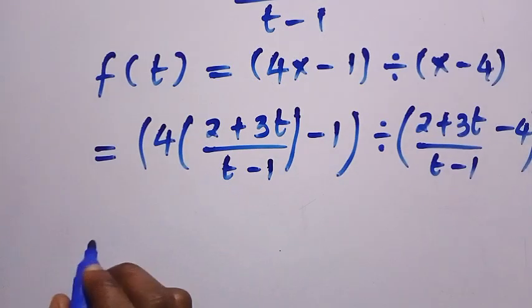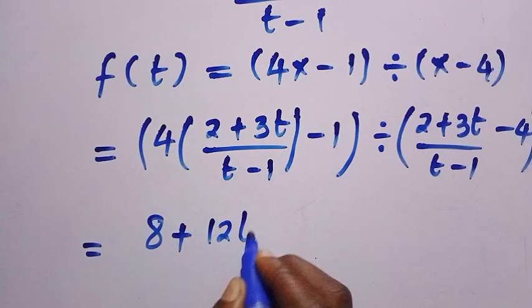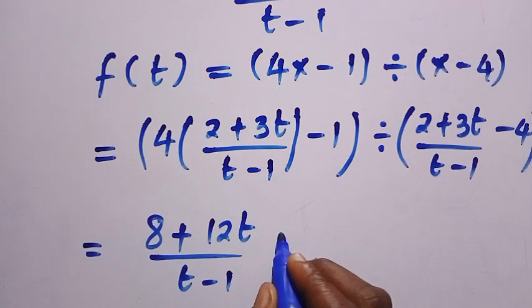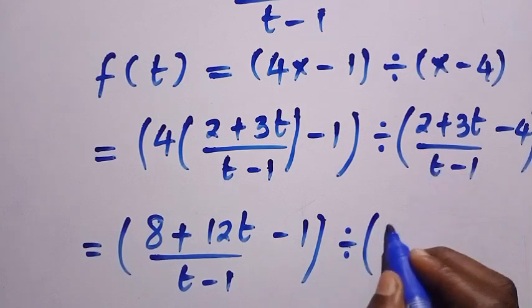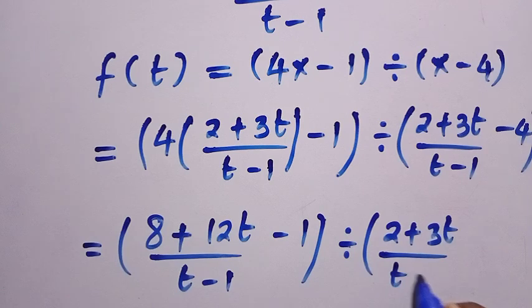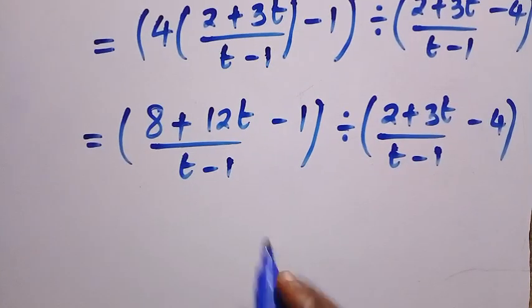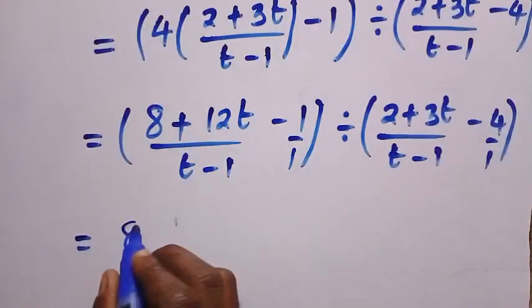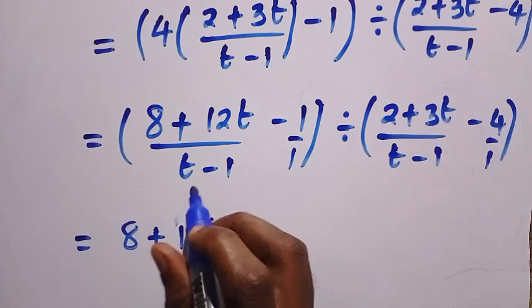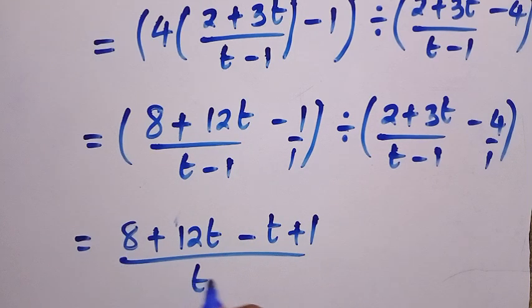Treating the numerator first: 4 times 2 is 8, plus 4 times 3t is 12t, divided by t minus 1, then minus 1. So the numerator becomes 8 plus 12t, divided by t minus 1, minus 1. Finding the LCM and multiplying through by t minus 1, we get 8 plus 12t minus (t minus 1), that is minus t plus 1, all divided by t minus 1.